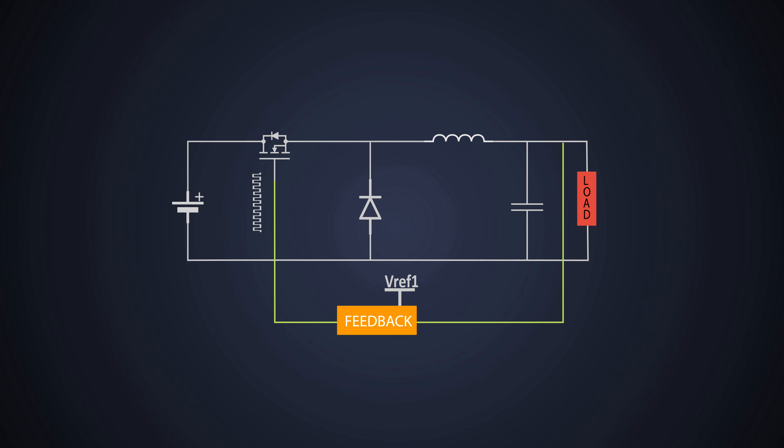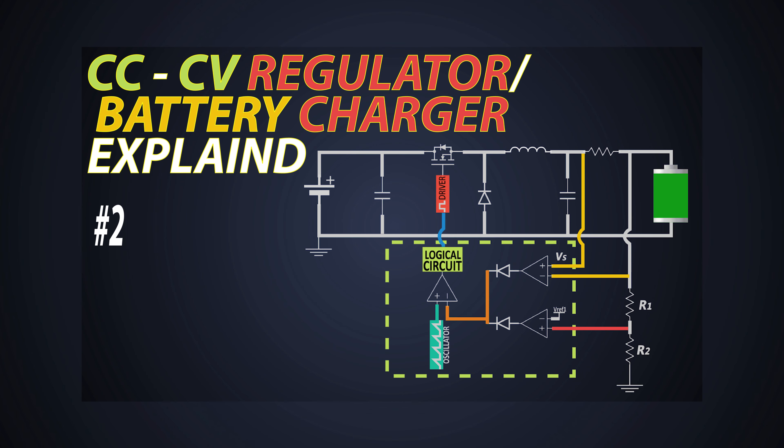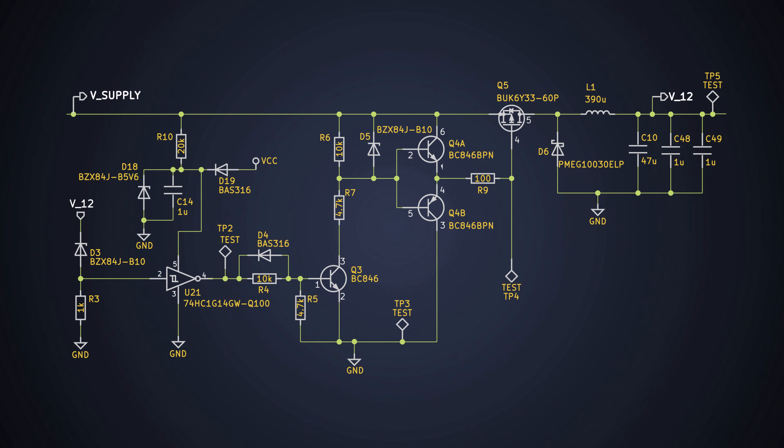We have already seen such control techniques while learning about the power factor correction and CCCV charger for battery. This control is achieved by op-amp based comparators and error amplifiers. But I found a very different and easy solution to control this buck converter without using a complicated technology, which only uses a Zener diode and not gate. Let's see the circuit.